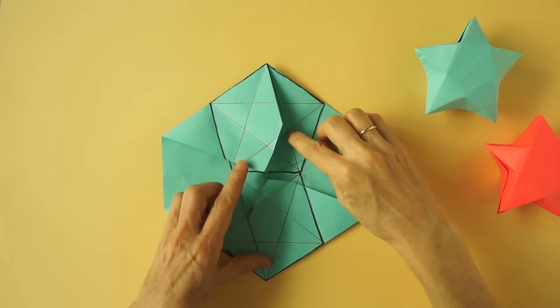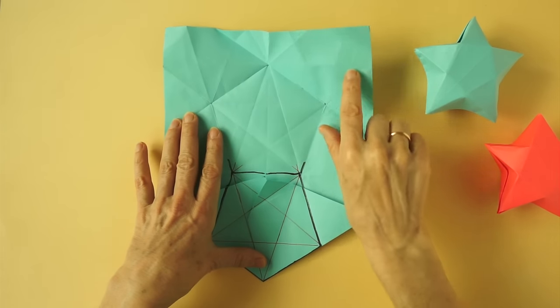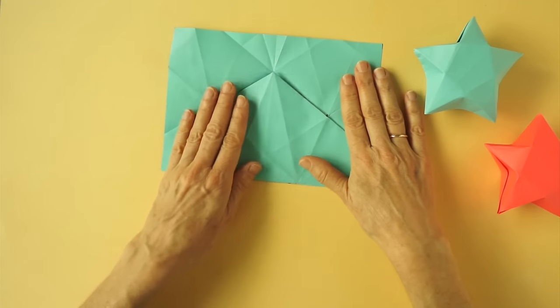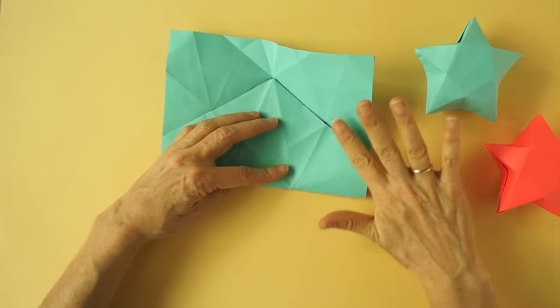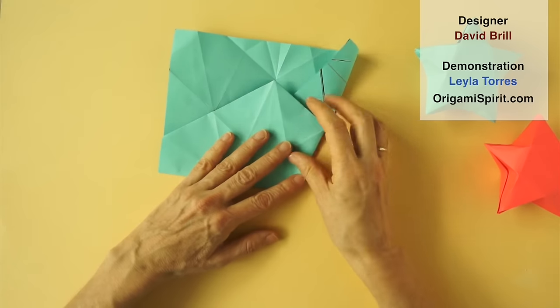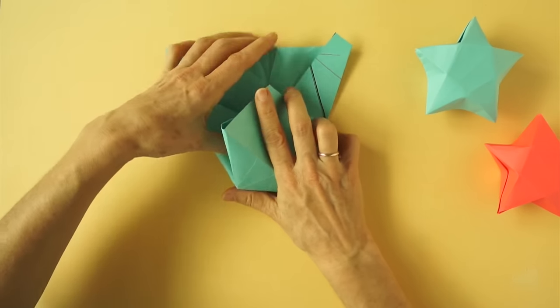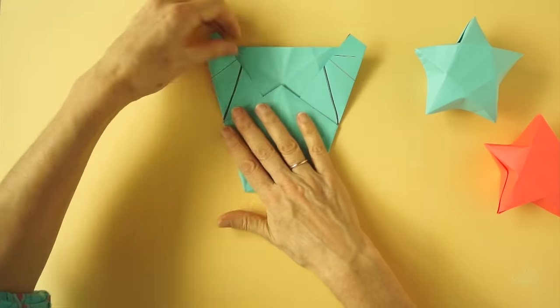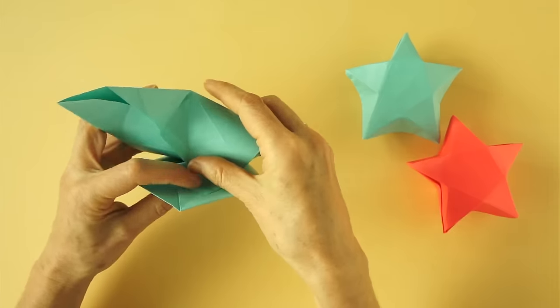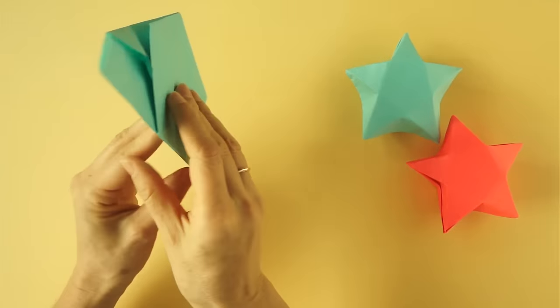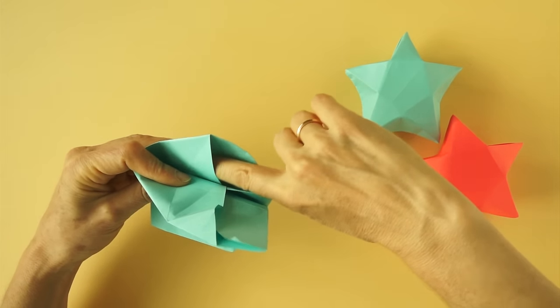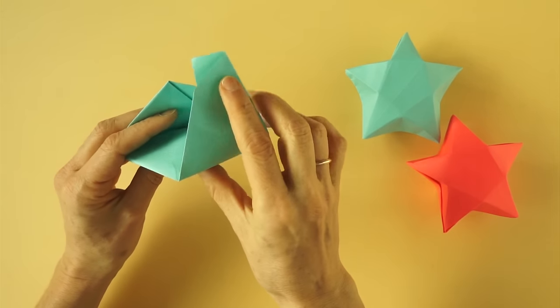Unfold the upper flaps. Bring this flap up. Inside reverse this area as we did before. Bring this flap down and inside. Turn this over. There is a pocket here. Insert this flap into that pocket.